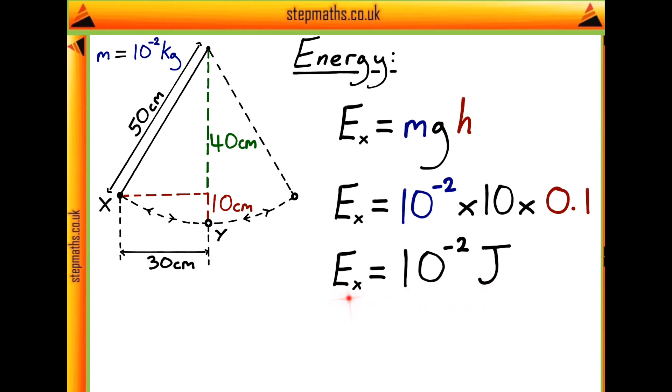And then since this is the energy at position x, and by conservation of energy we know that the energy at x and y is the same, then this is also going to be equal to the energy at y. So the energy at y is just going to also be 10 to the minus 2 joules.